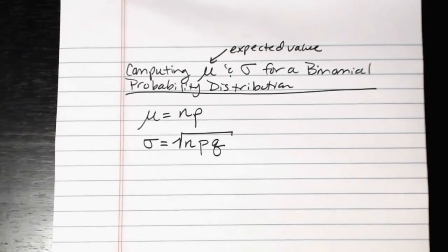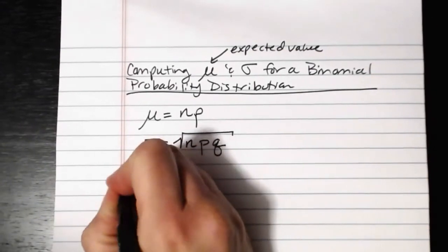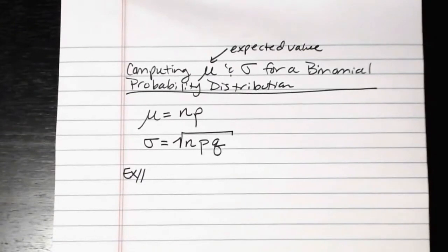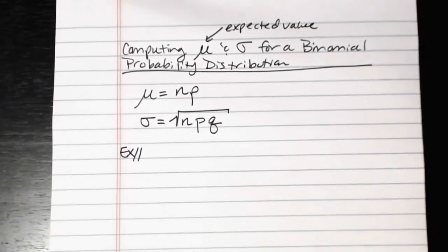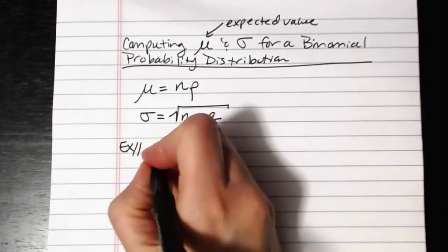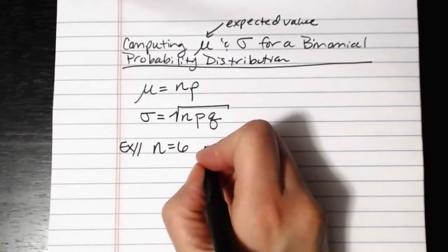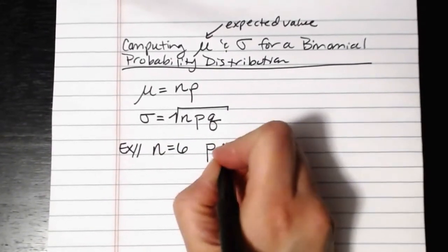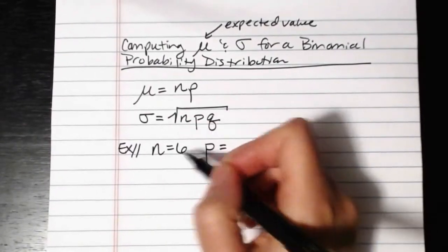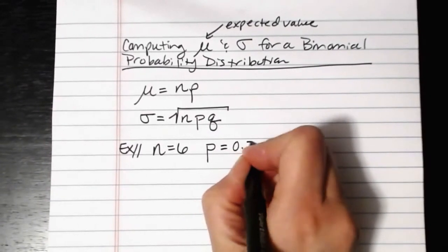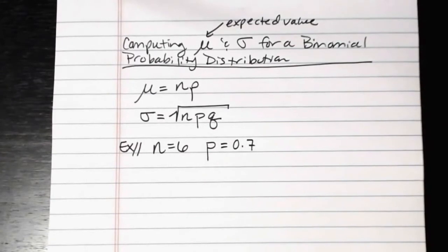Let's look at an example about the probability of people leaving a tip when dining out. We have six people who were dining alone, and from experience we know that the probability that any lone diner will leave a tip is about 0.7, or about 70%. We want to find the mean and standard deviation for this particular distribution.